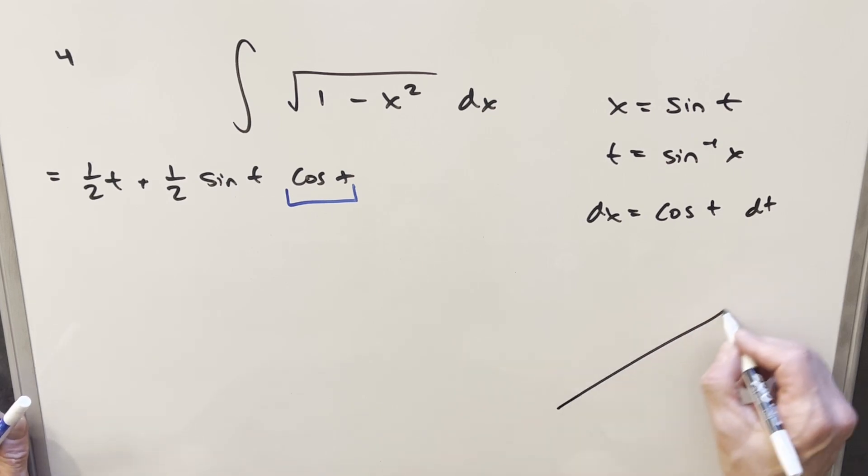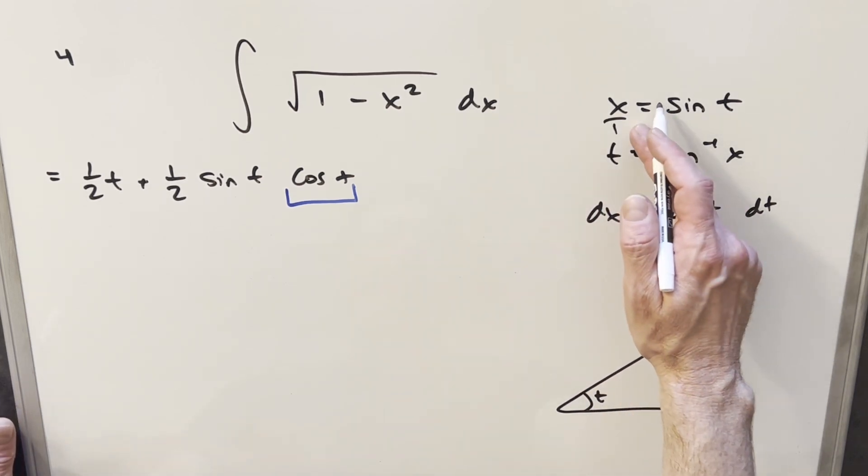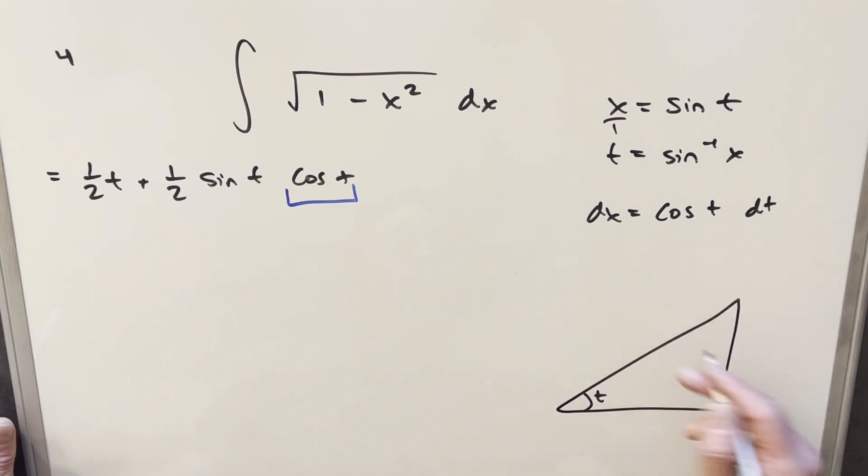And for that, what I'll do, I can just draw my triangle. And we'll just use our sine t value. So our angle will be t. I can write my x as x over 1. Sine is opposite over hypotenuse, so we can write this as x and 1 for the hypotenuse. Using Pythagorean theorem, we find our third side, which is going to be just 1 minus x squared.